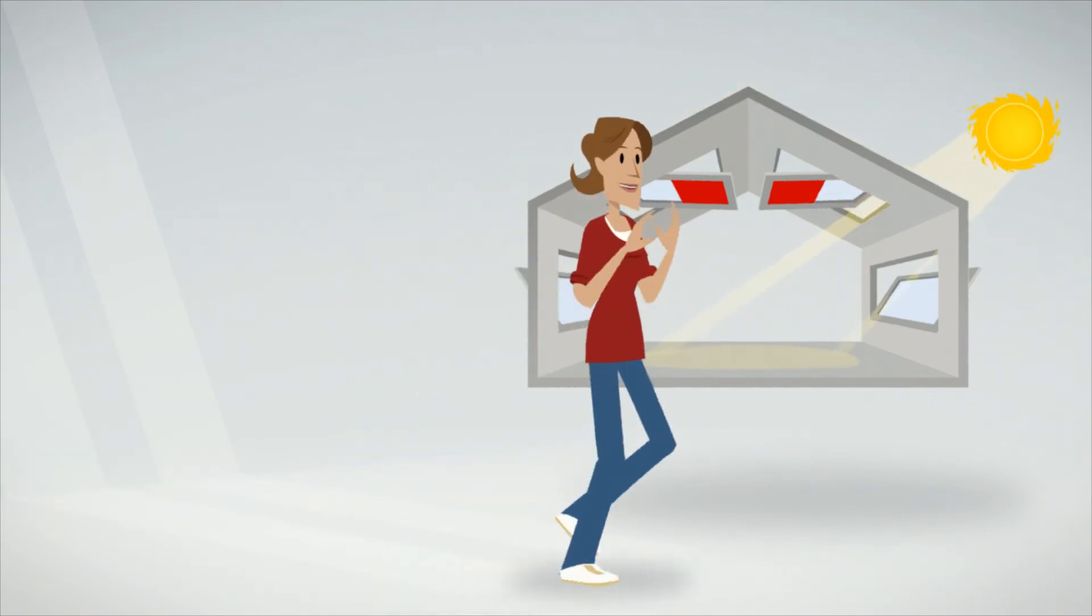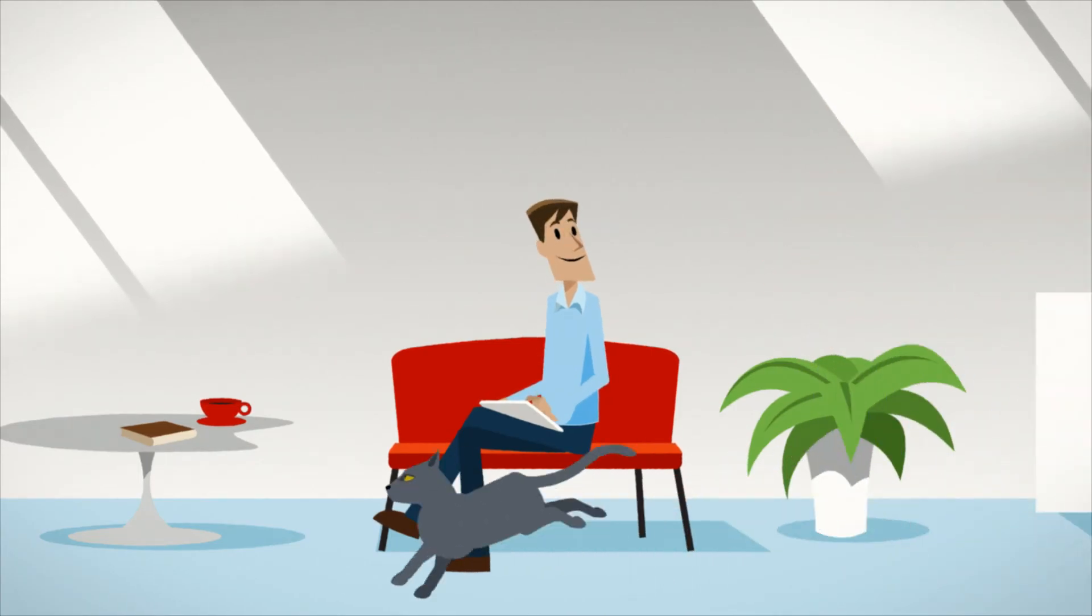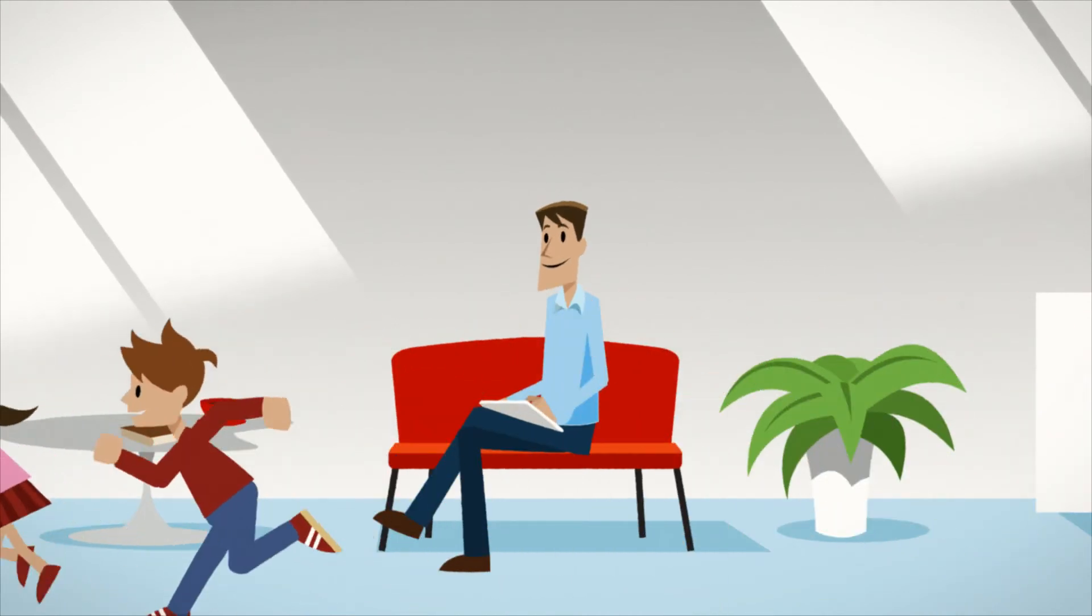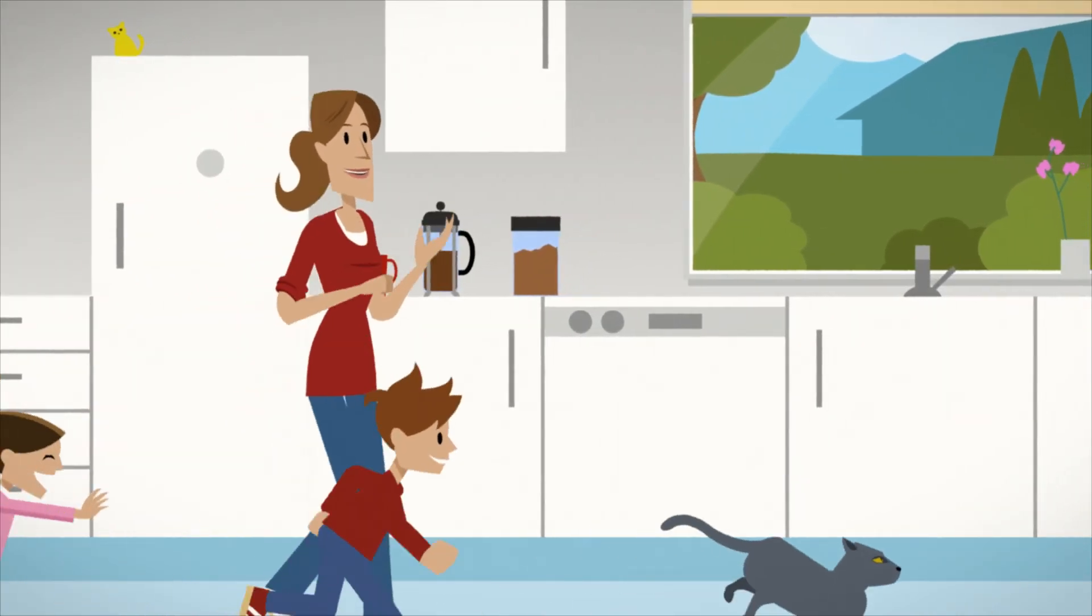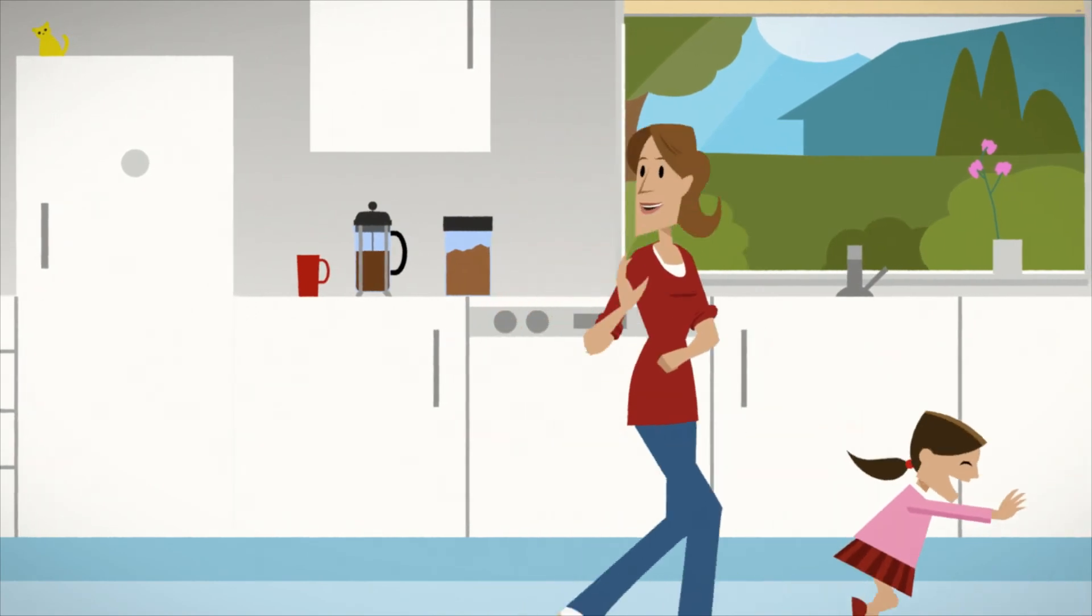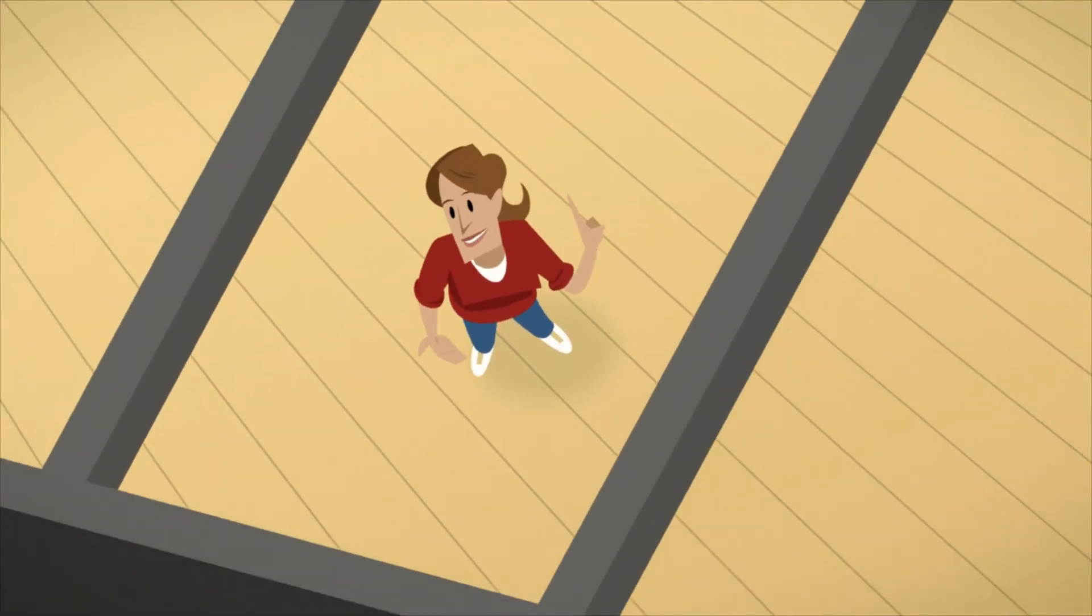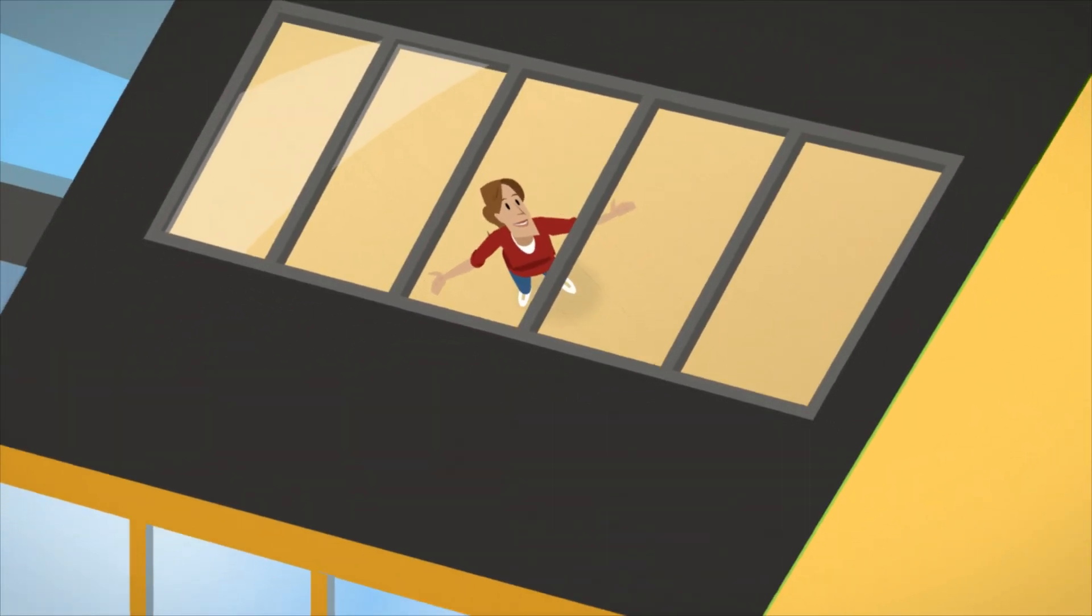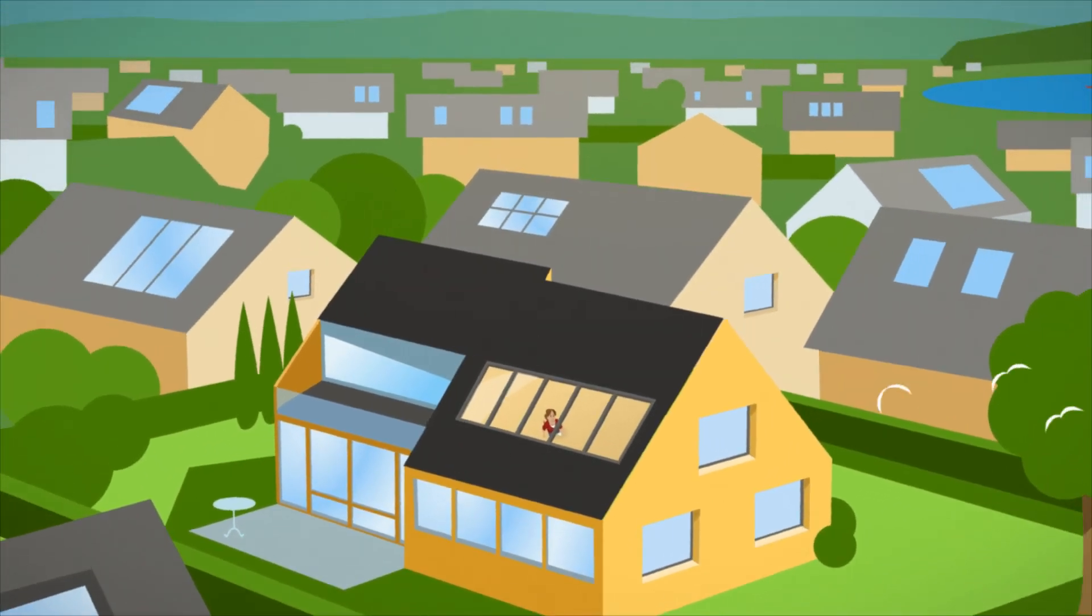A house resembles a living organism, where energy, daylight and fresh air will provide you with a fresh and healthy indoor climate. Your future home could be an active house, delivering environmentally friendly energy directly from the sun.